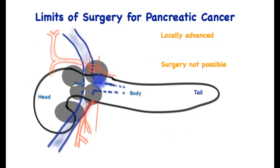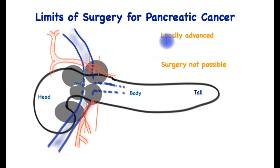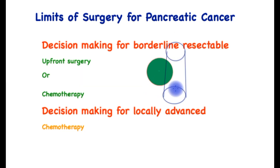This cartoon represents sites of cancer that are more advanced and involve the important blood vessels much more closely. Hence this would be called locally advanced pancreatic cancer, and surgery initially at least is not possible.